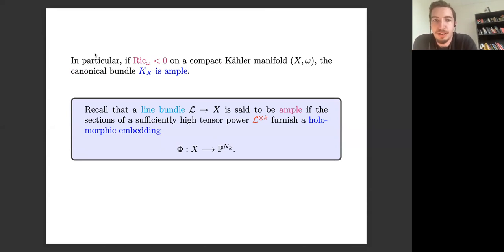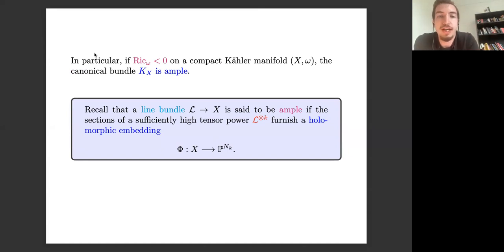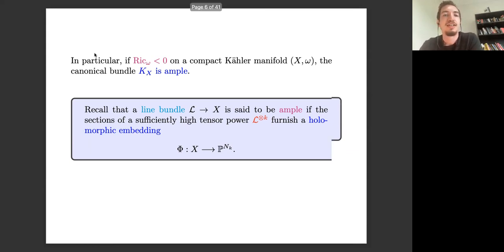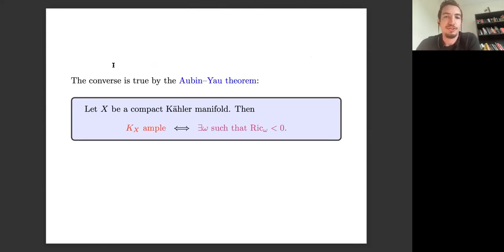Just to remind everyone, the canonical bundle is the top exterior power of the cotangent bundle. A line bundle is ample if the sections of some sufficiently high tensor power furnish a holomorphic embedding into projective space. The converse is true by the Aubin-Yau solution of the Calabi conjecture: for a compact Kähler manifold, Kₓ is ample if and only if there's a Kähler metric of negative Ricci curvature, and moreover this metric can indeed be chosen to be Einstein.